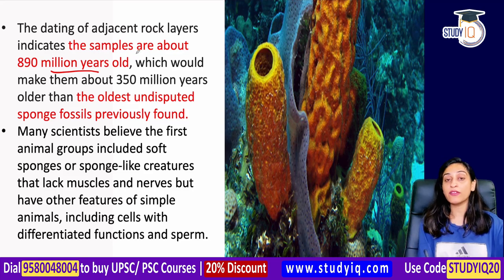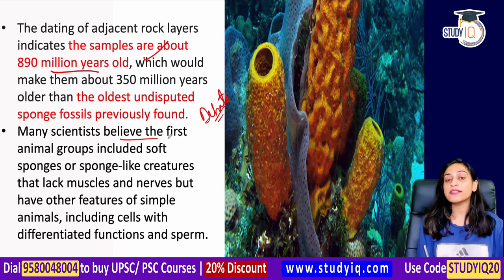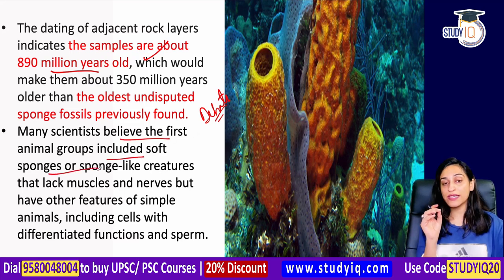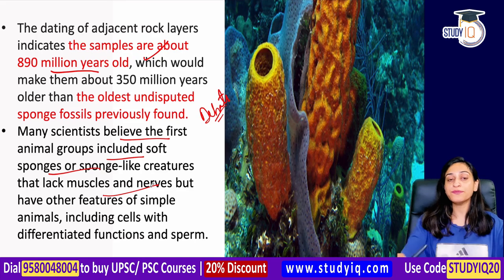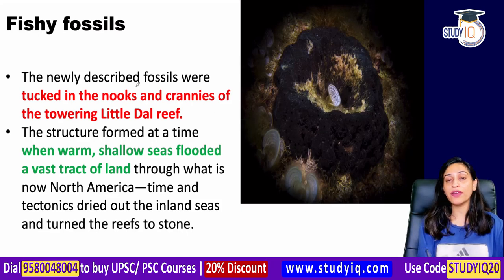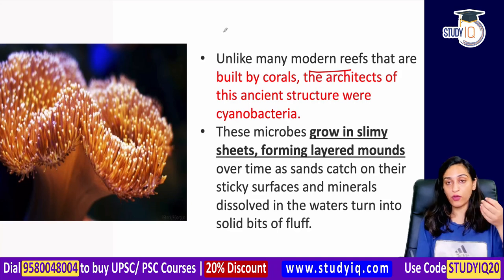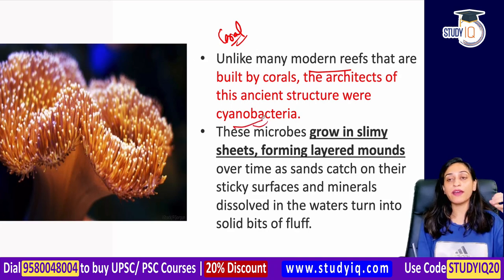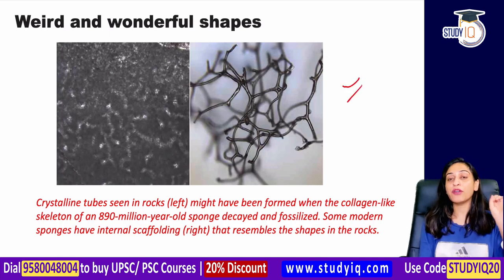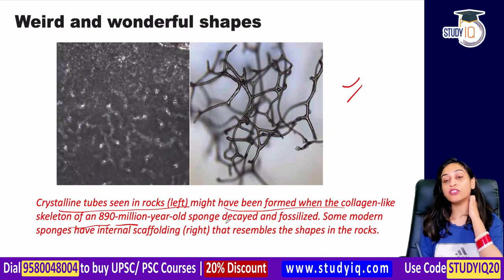The findings sparked debates, but scientists believe soft sponges or sponge-like creatures — which have no muscles or nerves but do have cells with differentiated functions — existed in what were once flooded vast tracts of land. Microscopic crystalline tube shapes seen in rocks might have formed when the collagen-like skeleton of this 890 million year old sponge decayed and fossilized.